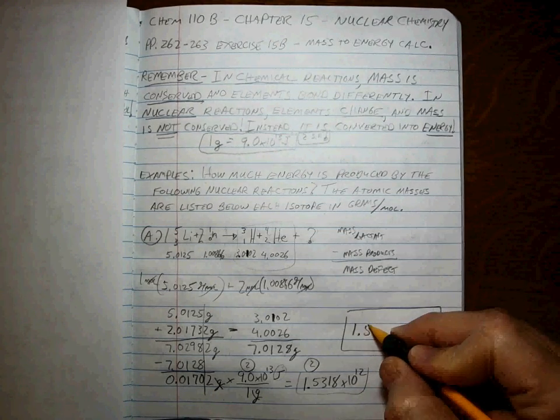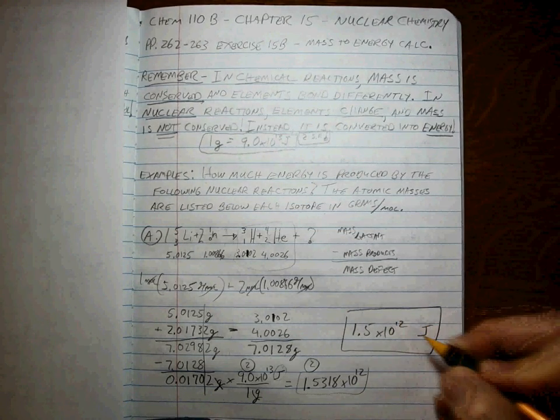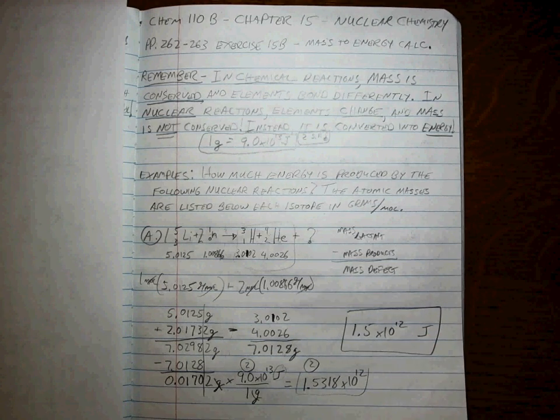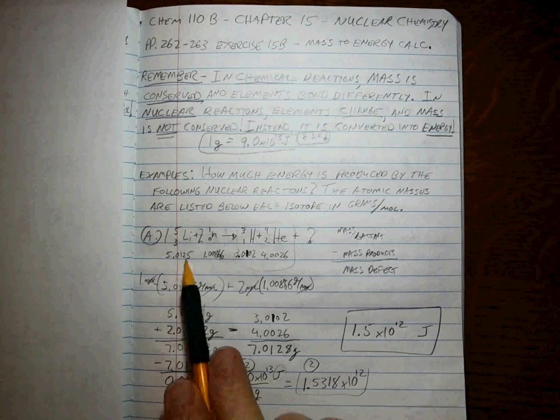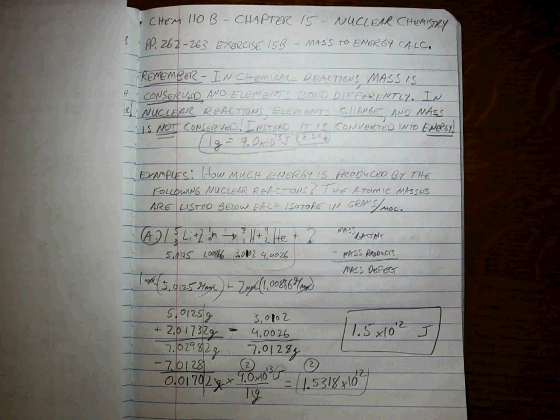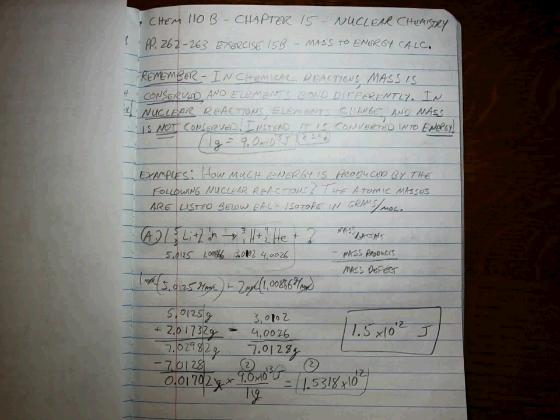1.5 times 10 to the 12th joules. That's it, that's the energy that was produced with this particular nuclear reaction. Okay, practice these up so that you could add it, because you're going to see it both on your next exam and on your final exam. Okay.